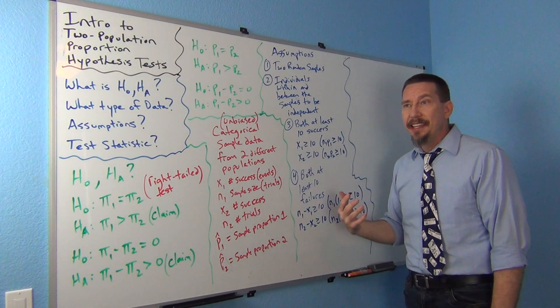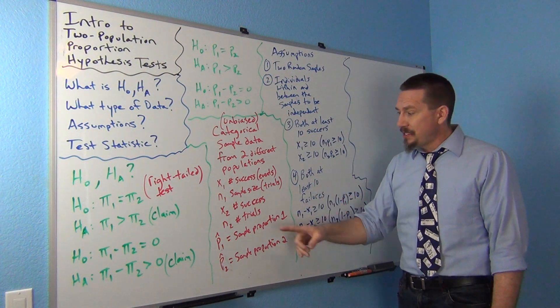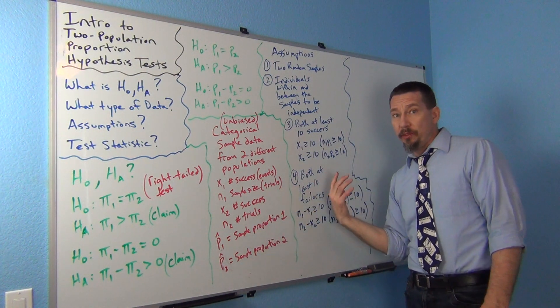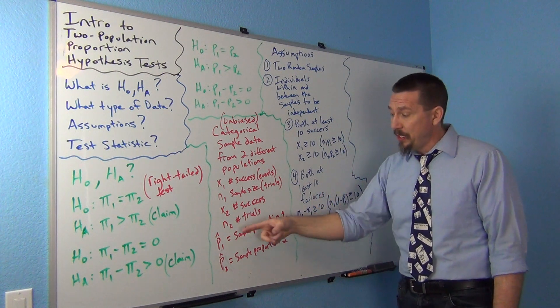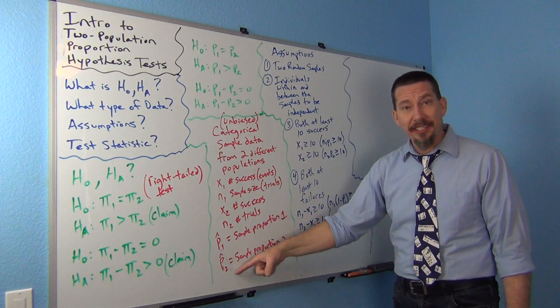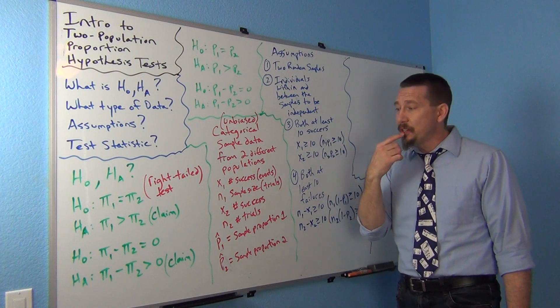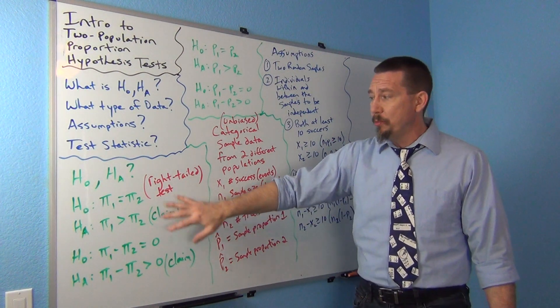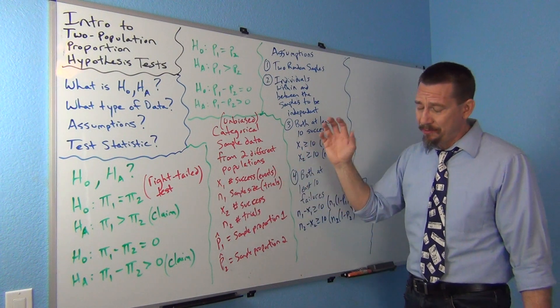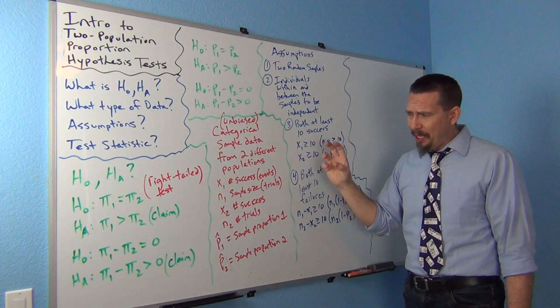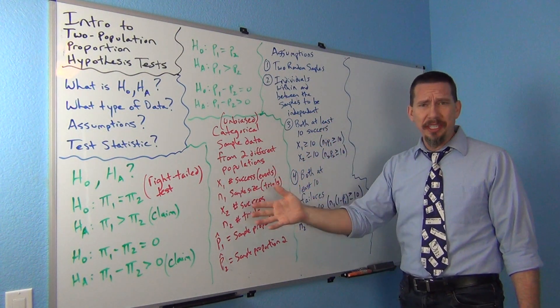But instead of saying how many standard errors is my sample proportion from this population proportion in the null hypothesis, now we're really comparing the two. So, usually what you're getting at is how many standard errors is the sample difference from zero, or as I like to think of it, is how many standard errors are my sample proportions apart?